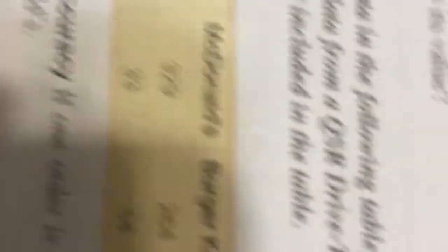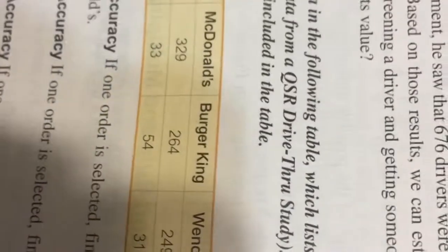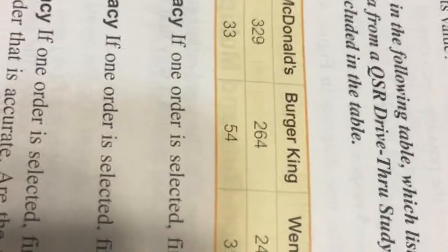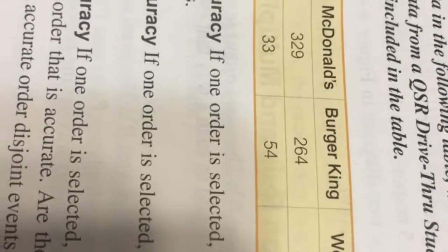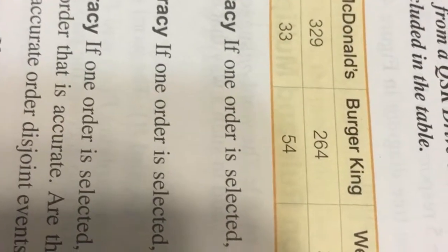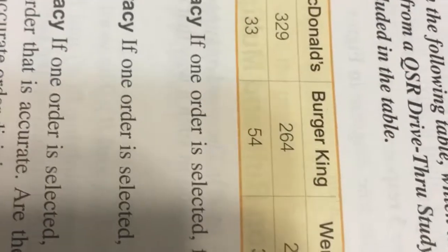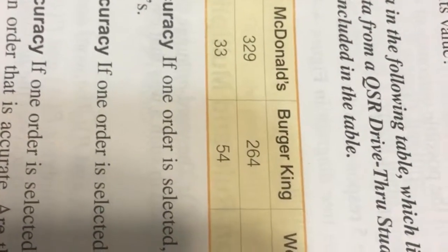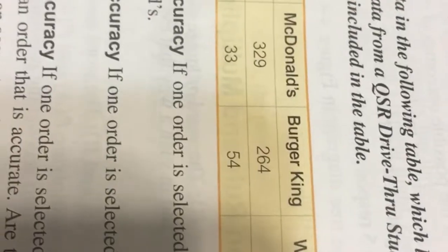If you look at Wendy's, Wendy's has both accurate and inaccurate orders, just like all of them do. So they are not disjointed because there's a possibility of getting both not accurate and Wendy's. So here we go with the calculations again — we're going to use our addition rule again.